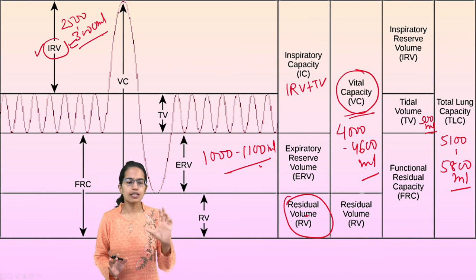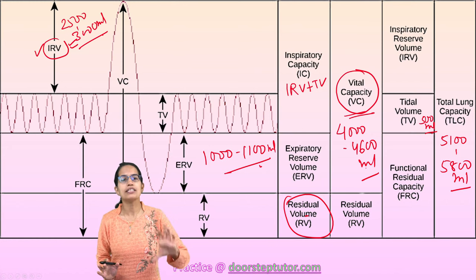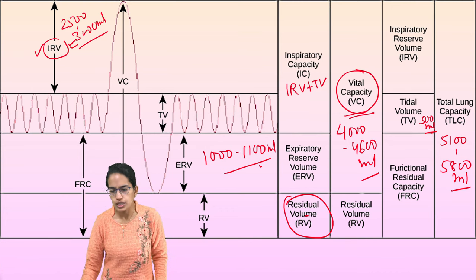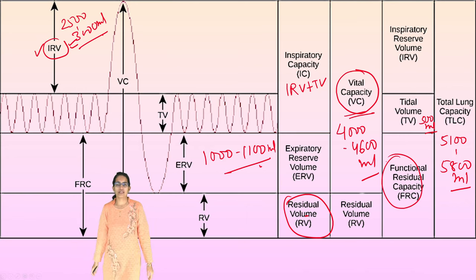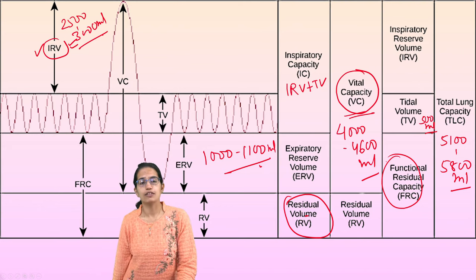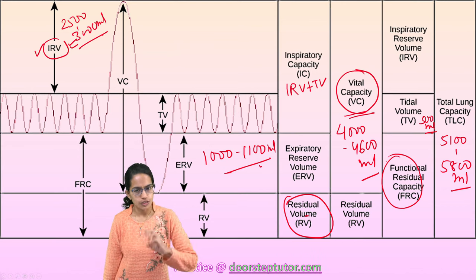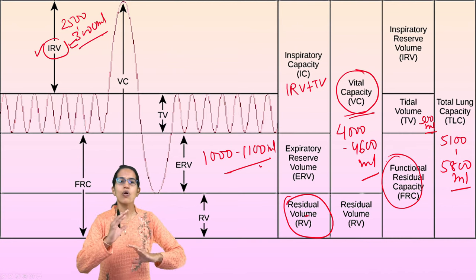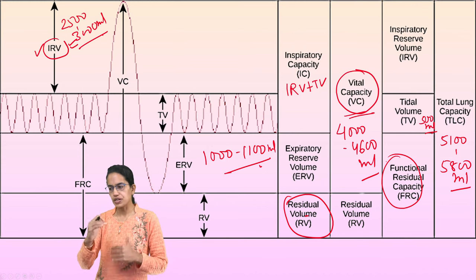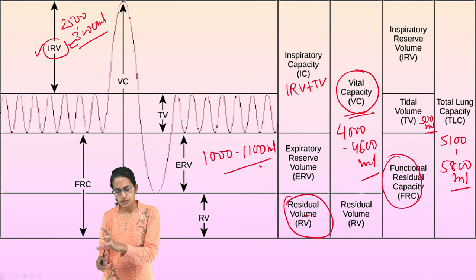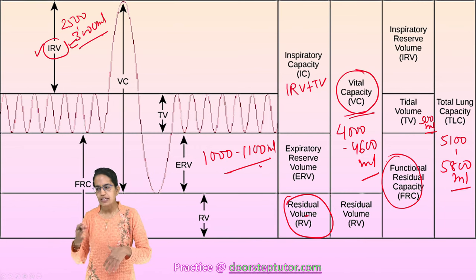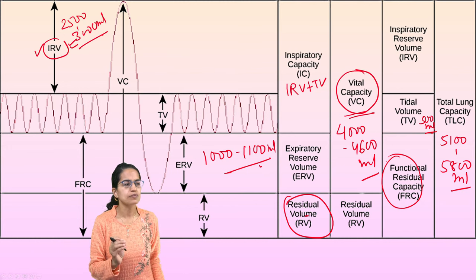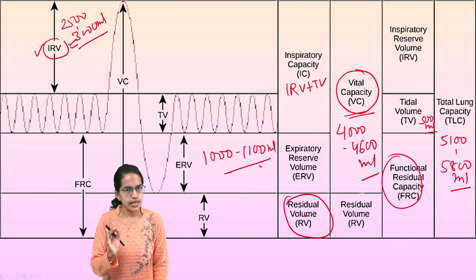Another important formulation: the residual volume and the expiratory reserve volume together form the functional residual capacity of the lungs. To summarize: inspiratory capacity plus expiratory reserve volume equals vital capacity; vital capacity plus residual volume equals total lung capacity; expiratory reserve volume plus residual volume equals functional residual capacity. The dead air space is the volume of tidal air that remains in the respiratory passage with no gas exchange — around 150 ml.